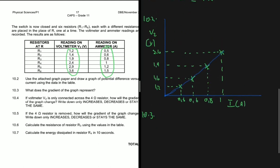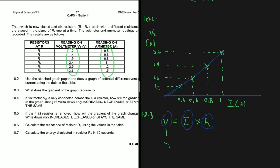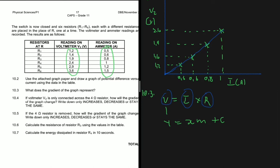Question 10.3 asks what the gradient of the graph represents. Every time you have a graph, you should be able to derive an equation for it. We have voltage on the y-axis and current on the x-axis. We know there's no internal resistance, so we cannot talk about EMF. The only equation we can use is V equals I multiplied by R. The voltage is already our y and I is already our x, so the gradient will be our R, which is resistance.